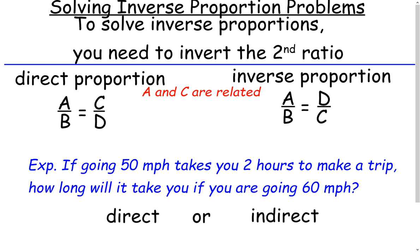So when you're solving inverse proportion problems, you need to invert the second ratio, basically. For a direct proportion, you have a ratio that says A over B equals C over D, and A and C are related. For an inverse proportion, A and C are related, but if A is going up, C is going down, and vice versa.